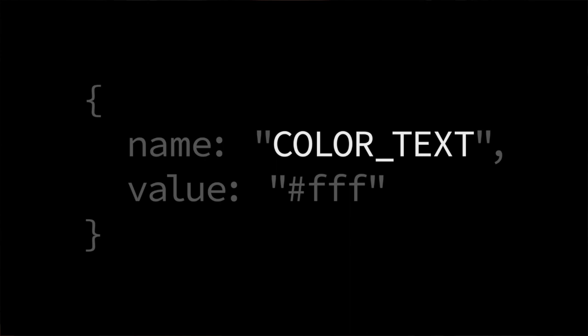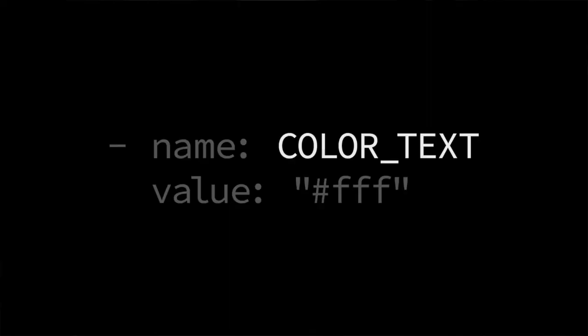Our design token system was generating that XML data, and we also generated Sass for teams using Sass, and Android for teams using Android, and so on. Where did that data come from? You can store your data in a lot of different ways. At that time, Sass maps didn't really exist yet, so we did it with JSON.